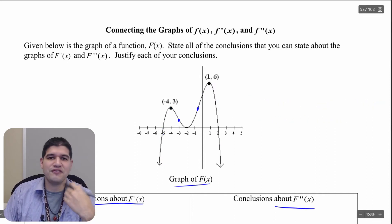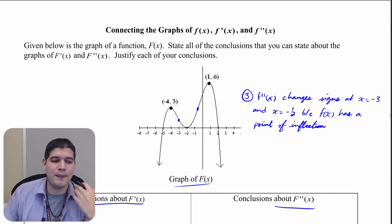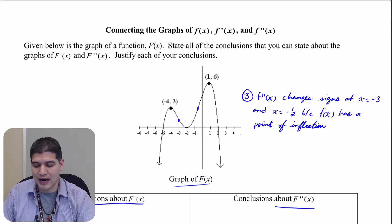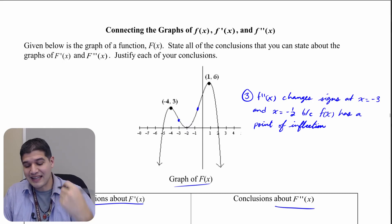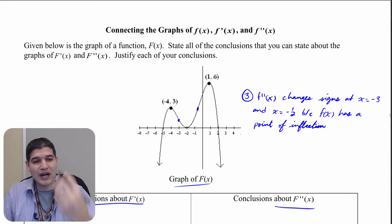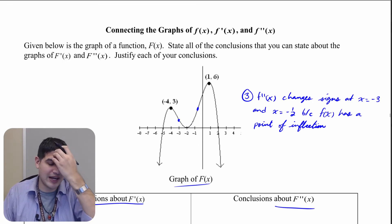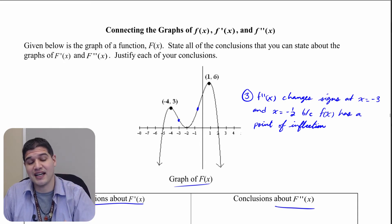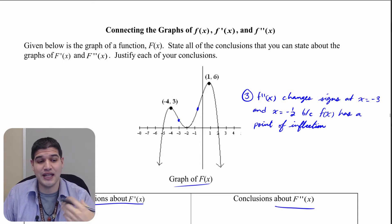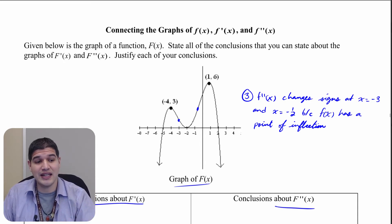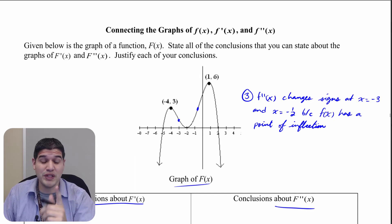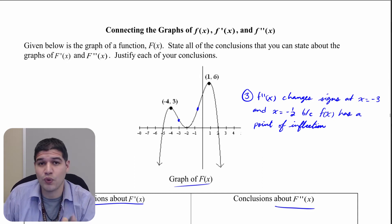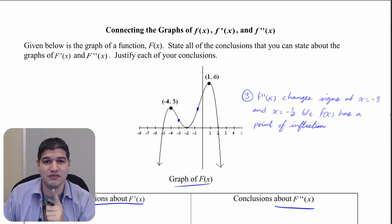The final conclusion about the second derivative is that f double prime is going to be changing signs at x equals negative 3 and x equals negative one-half. The reason we know that is because those are points of inflection.